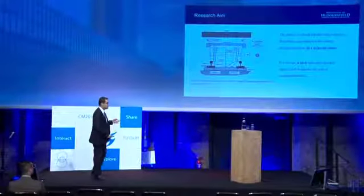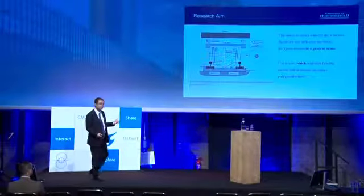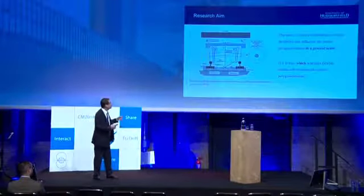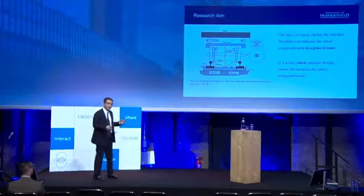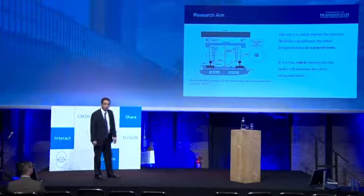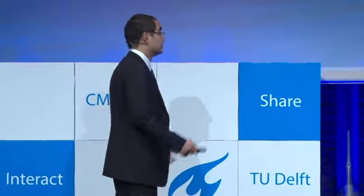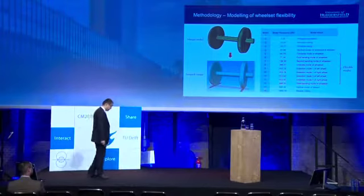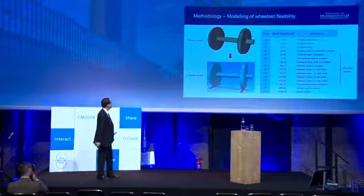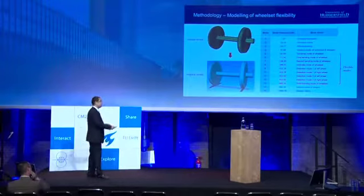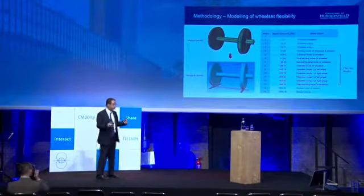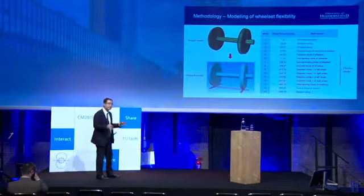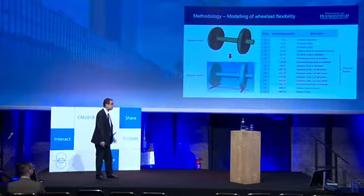So the aim of this research is to carry out fundamental research to check whether the wheelset flexibility can influence wheel polygonization in a general sense. If it's true, which wheelset modes will dominate the wheel polygonization? The flexibility of the wheelset is investigated by importing its finite element model into a multibody simulation model, which is intentionally kept very simple to minimize unexpected influencing factors.